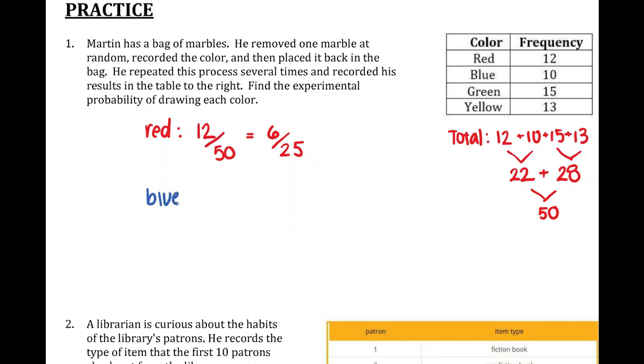For the blue marble, based on the experiment, Martin chose blue ten out of fifty times, which reduces to one-fifth.